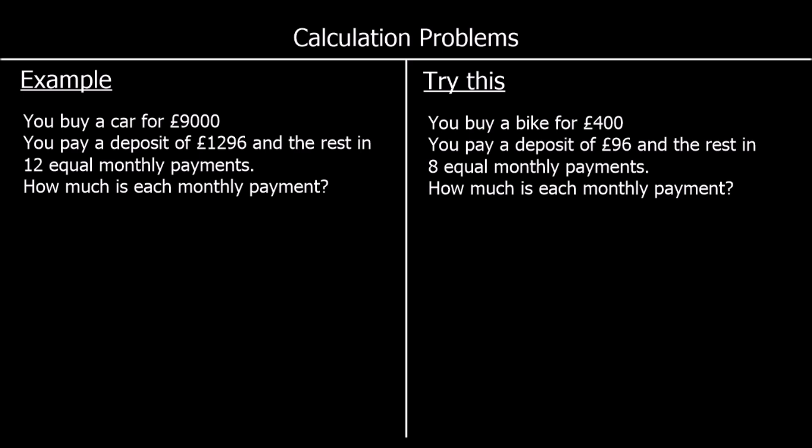Here we've got another different question. You buy a car for £9,000. You pay a deposit of £1,296, and the rest is in 12 equal monthly payments. How much is each monthly payment? So we're going to take away the deposit to find out how much is left to pay, and then divide that by 12.